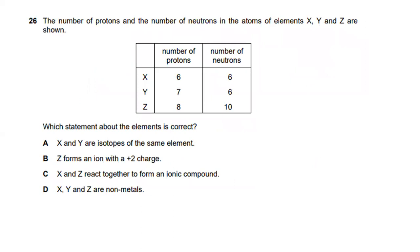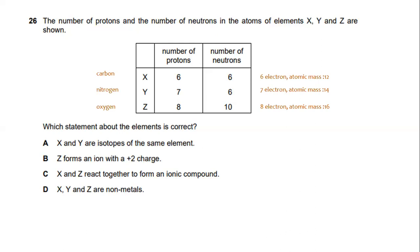The number of protons and neutrons in the atoms of elements X, Y and Z are shown. X consists of 6 protons and 6 neutrons, Y consists of 7 protons and 6 neutrons, and Z consists of 8 protons and 10 neutrons. X represents carbon, Y represents nitrogen, and Z is oxygen. The answer is that X, Y and Z are all non-metals.